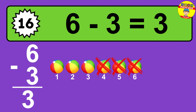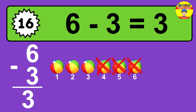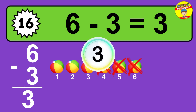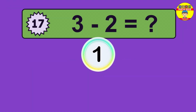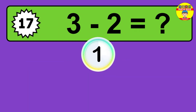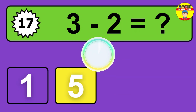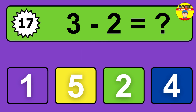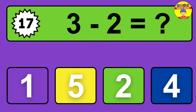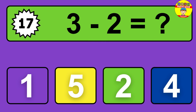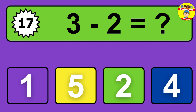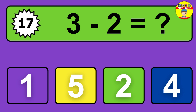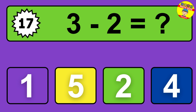Question eighteen: nine minus two equals what? So the answer is nine minus two is seven. Let's count it — one, two, three, four, five, six, seven.